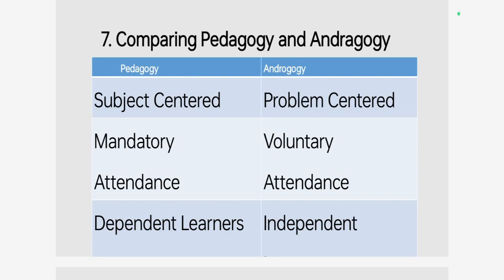Pedagogy is learning for children, while andragogy is for adults. We compare what the characters of the learners look like, what the learning and teaching should look like, and how the learners or adults behave from both the pedagogic and andragogy perspectives.